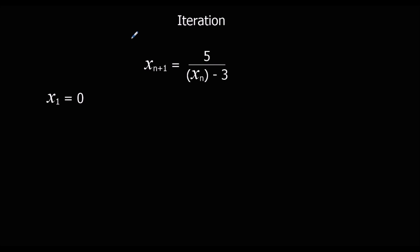Okay, here's another iteration question. So we're told x1, the first term, the first one is 0. So if we want to work out x2, it's 5 over x1 minus 3. x3, 5 over x2 minus 3.